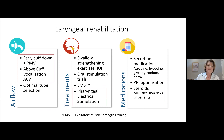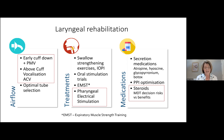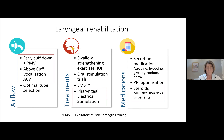I organise rehabilitation into three themes: airflow, treatments, and medications. Airflow is about early cuff deflation, one-way valve use, above-cuff vocalisation when cuff deflation isn't possible, and optimal tube selection including downsizing. Treatments at our disposal include swallow strengthening exercises, tongue strengthening with IOP, oral stimulation trials or therapeutic tastes, and EMST — expiratory muscle strength training. I'm going to focus particularly on pharyngeal electrical stimulation.